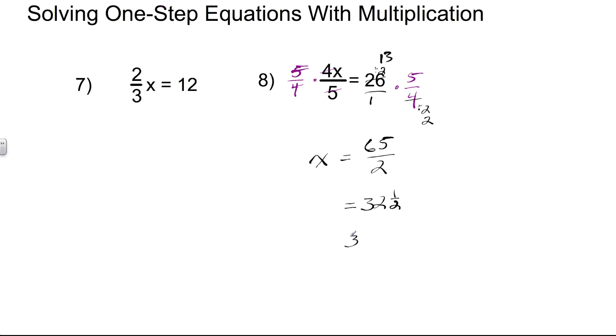Or as a decimal, 32.5. You could have solved this problem with the other method. Instead of multiplying by the reciprocal, we could have multiplied both sides by 5, and then divided both sides by 4, and we would have arrived at the same result. 65 over 2 or 32 and a half.